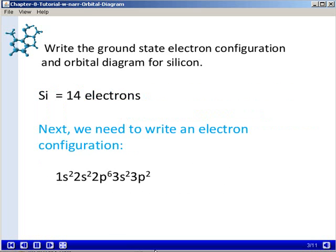So we need to account for 14 electrons with our electron configuration. We'll write the electron configuration as follows: 1s2, 2s2, 2p6, 3s2, 3p2. That accounts for all 14 electrons.